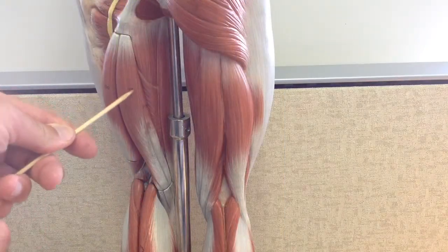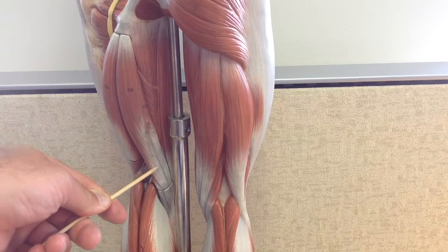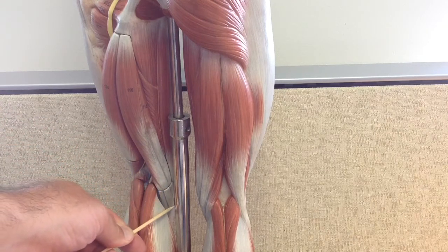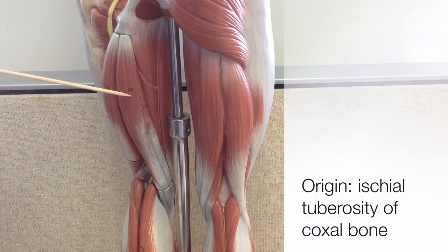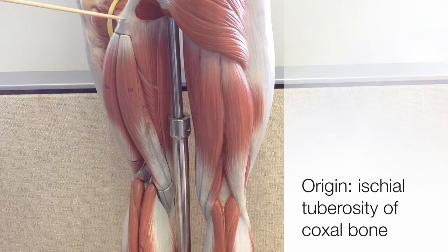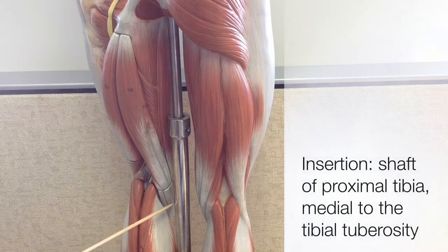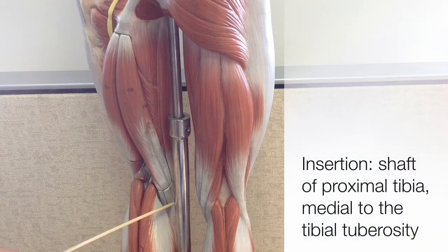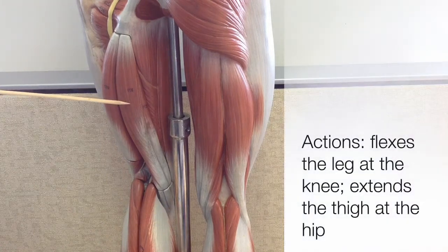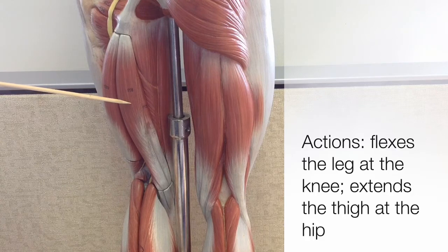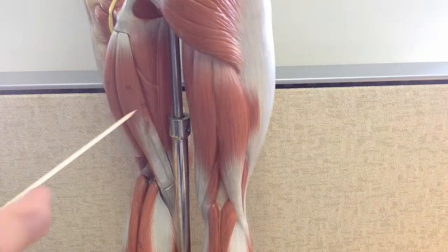The second of our hamstring muscles is the semi-tendinosus, named after its long tendon which heads down to the tibia. Like the biceps femoris, its origin is on the ischial tuberosity of the coxal bone. It inserts onto the proximal shaft of the tibia, just a bit medial of the tibial tuberosity. The semi-tendinosus performs the same actions as the other muscles of the hamstring group: flexion of the leg at the knee and extension of the thigh at the hip.